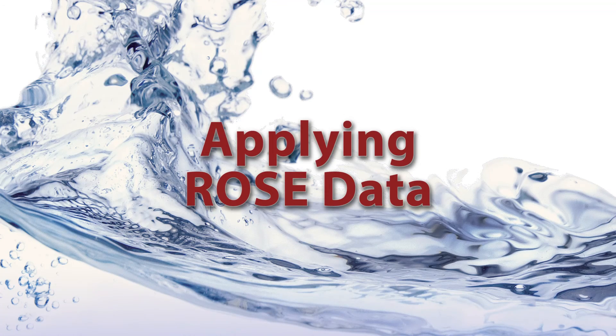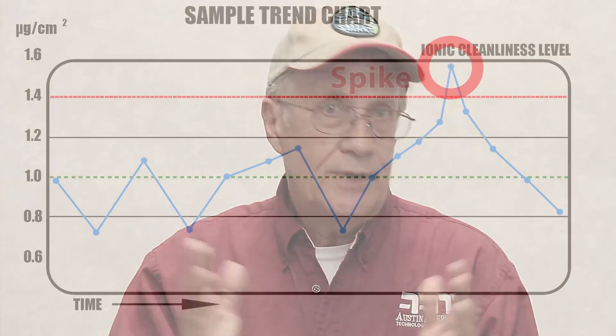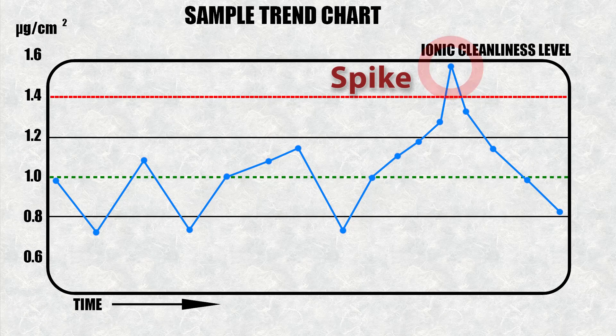You can also use ROSE data to establish control limits. For example, if your process average is one microgram per square centimeter with a standard deviation of plus or minus 0.2, that establishes control limits between 0.8 and 1.2 — below the maximum allowable. That's where your normal process operates. If a result falls outside those control limits, that should be a flag to investigate why. We're looking for trends and trying to divert those trends from becoming problems — and that's how you use your ROSE data to protect your company, its products, and your reputation.